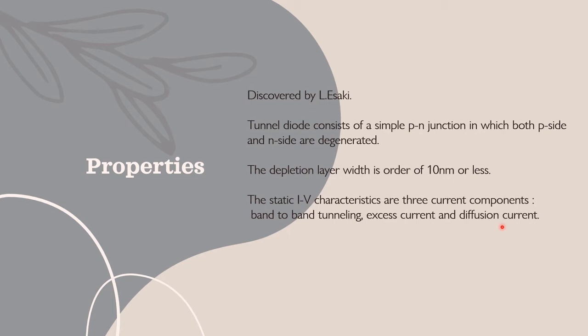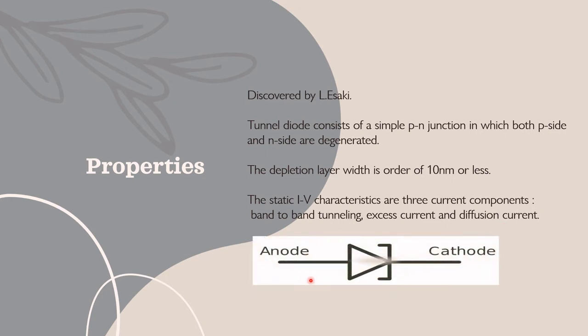When we look at the current-voltage characteristics or static characteristics of a tunnel diode, we see a negative slope region when the diode is in forward bias condition. This negative slope occurs due to quantum mechanical tunneling, and we will discuss this topic in a later slide. These are the basic properties, and this is the circuit symbol of a tunnel diode — this side is the anode and this side is the cathode, meaning this is the P-side and this is the N-side.